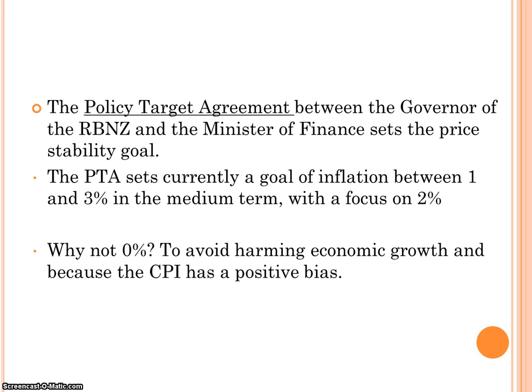Within the Reserve Bank Act, there's a thing called a Policy Target Agreement — an agreement between the Minister of Finance and the Governor of the Reserve Bank that sets what the price stability goal is. In NCEA exams they often refer to this. The current goal is for inflation to be between 1% and 3% in the medium term, with a focus on 2%. That is the Reserve Bank's agreed target, though it can change.